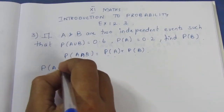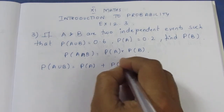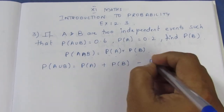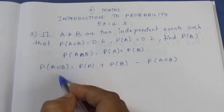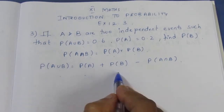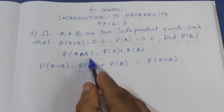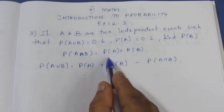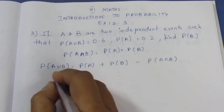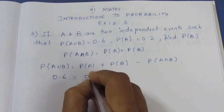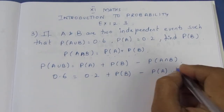P of A union B equals P of A plus P of B minus P of A intersection B. Since A and B are independent, we can substitute P of A intersection B as P of A into P of B. Substituting the values: 0.6 equals 0.2 plus P of B minus P of A into P of B.